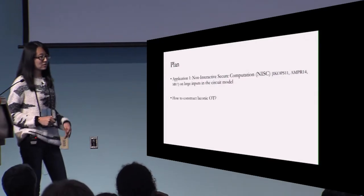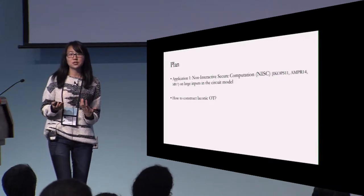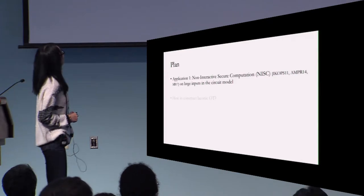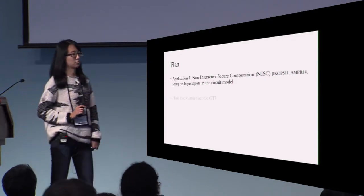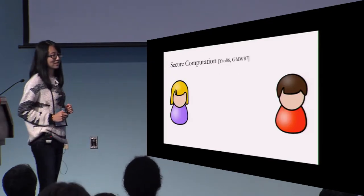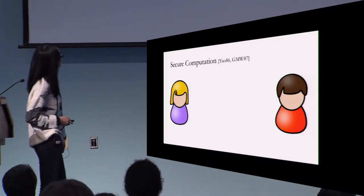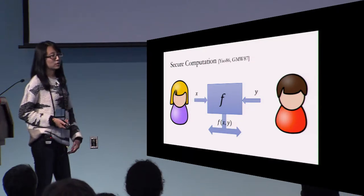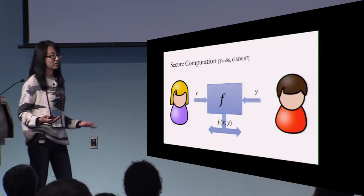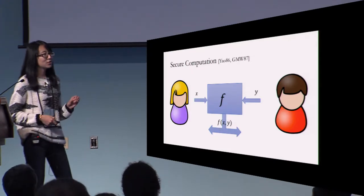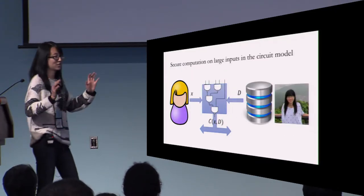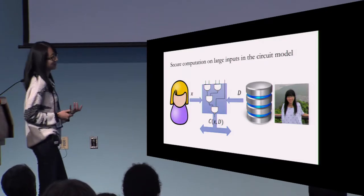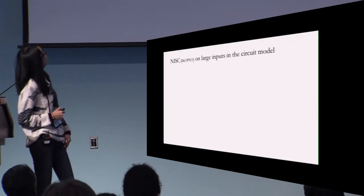In the rest of the talk, I will first talk about the first application to give you a better sense of how to use laconic OT, and then I will tell you how to construct it from DDH. The first application is non-interactive secure computation for large inputs in the circuit model. Let's start with the definition of secure two-party computation. We have two parties who want to jointly compute some function f on their private inputs x and y. Both parties want to learn the output f(x, y) without revealing any more information about their private inputs.